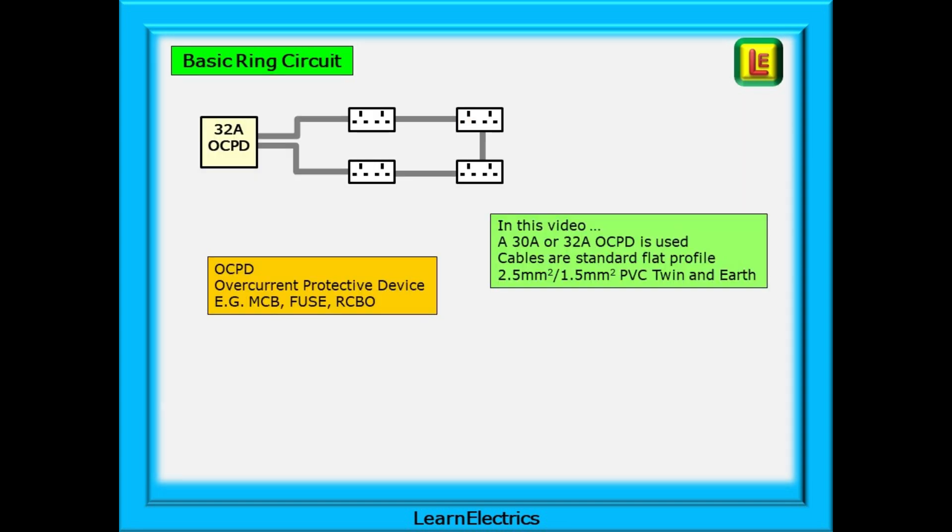This is our basic ring circuit. In this video we'll assume that a 30 amp or 32 amp OCPD is used. OCPD is an abbreviation for overcurrent protective device, in other words a circuit breaker or MCB, a fuse or an RCBO, but not an RCD. Cable sizes used in the video are relevant to the standard grey flat profile 2.5 by 1.5 PVC twin and earth, and we've assumed when needed that there are no adverse conditions or temperature issues that would require larger sized cables.